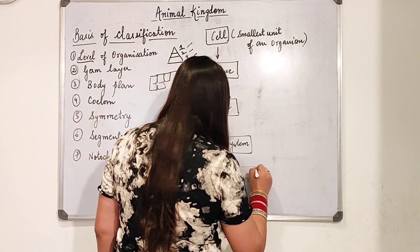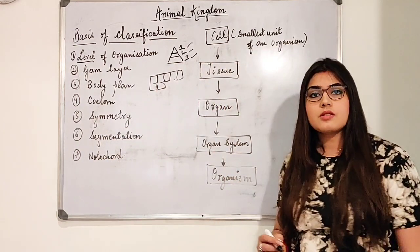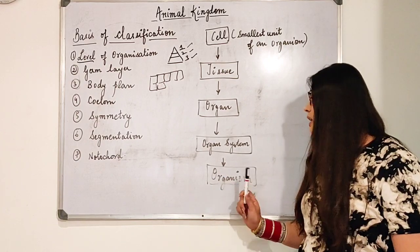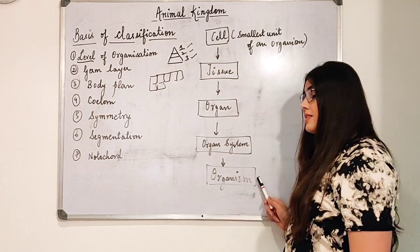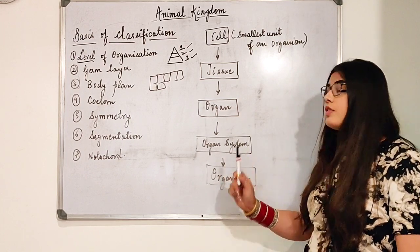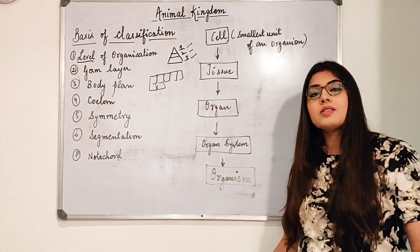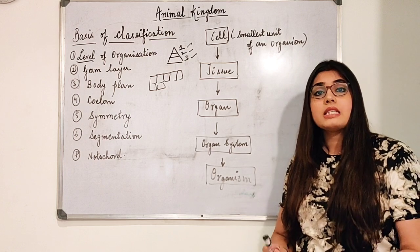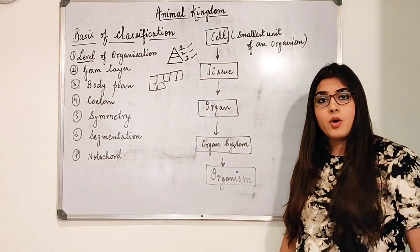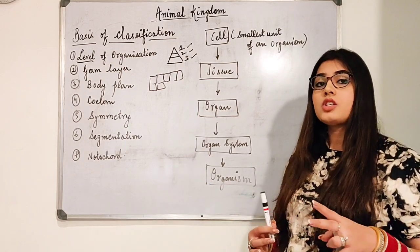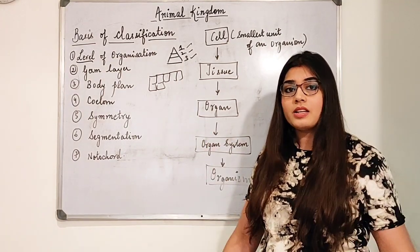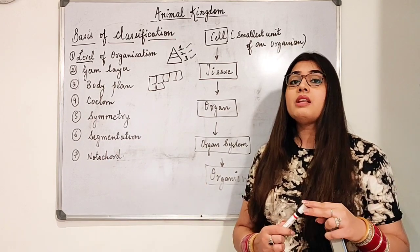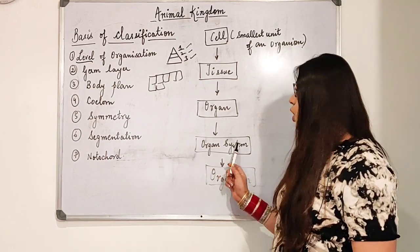We ourselves are organisms — the scientific name of human beings is Homo sapiens. We are also formed of organ systems: the digestive system, circulatory system, respiratory system, reproductive system, excretory system, and so many more are present in our body, all performing together.